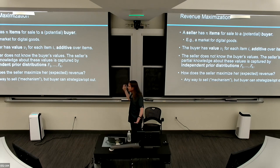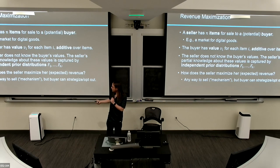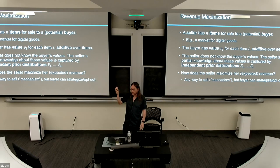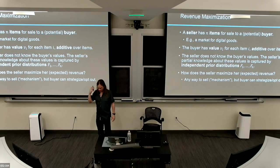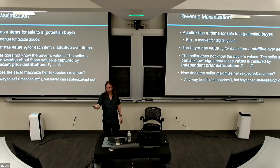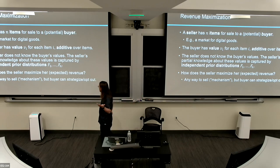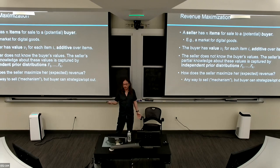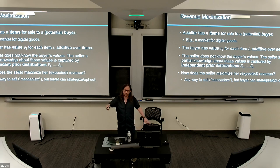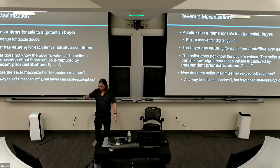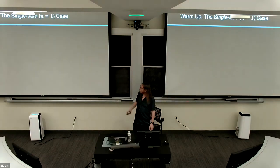The seller has partial information captured as prior distributions F_1 through F_n, assumed independent: V_1 drawn from F_1, V_2 from F_2, etc. The main question in mechanism design is how does the seller maximize expected revenue? The seller can choose any mechanism, but the buyer can strategize and opt out. If the seller asks the buyer their value and plans to charge one cent less, the buyer will report one cent. And the seller can't charge a million dollars — the buyer will just not participate.